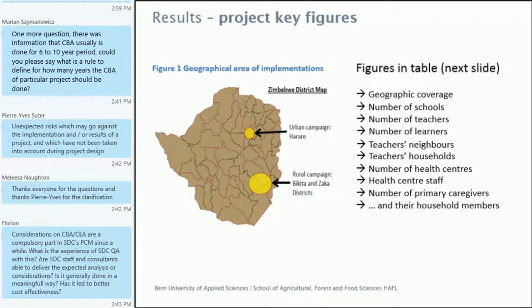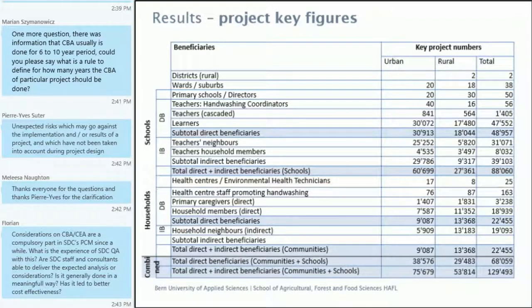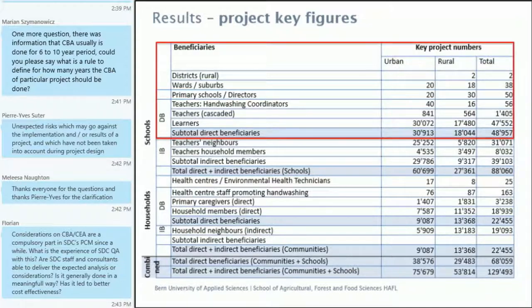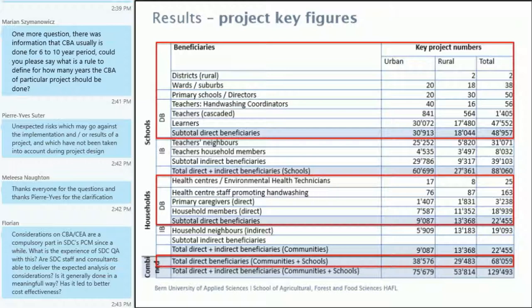Looking at the numbers: we are dealing with about 48,000 total direct beneficiaries in schools. Then we have about 22,000 direct beneficiaries in households, with a total of 68 direct and 129 indirect beneficiaries. These are the project key figures, and these figures will be important when we calculate per-unit costs.